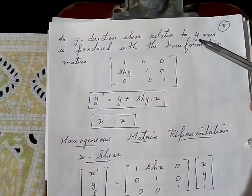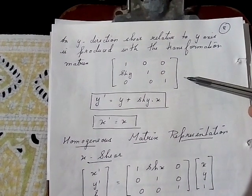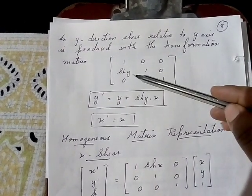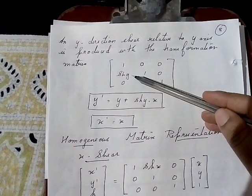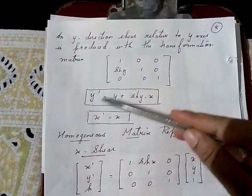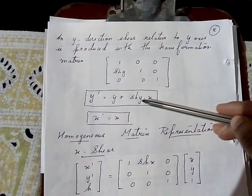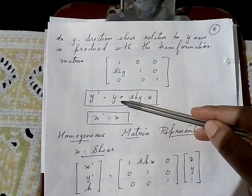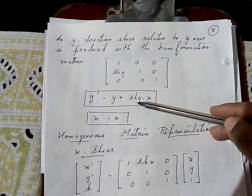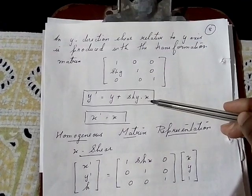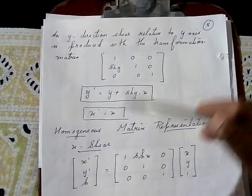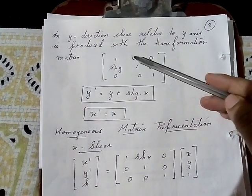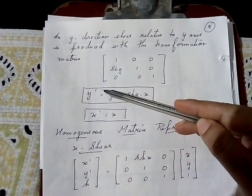When performing y-direction shear, the y coordinate will change and the x coordinate will remain the same. The parameter sh_y (y-shear parameter) is given. The formula for y-dash is: y-dash = y + sh_y × x, where y is the old value of y, sh_y is the y-direction shear parameter, and x is the old value of x.